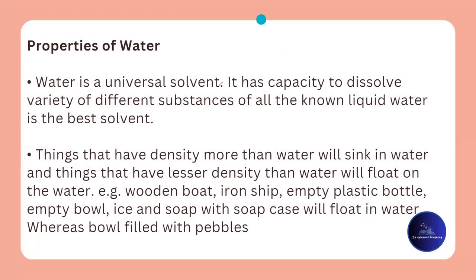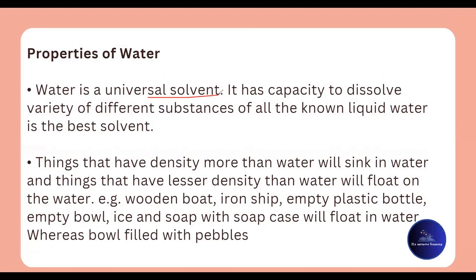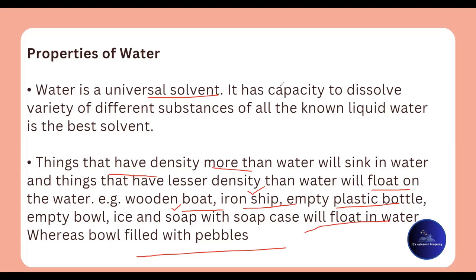Water is a universal solvent — you can dissolve many things in it, it has the property to dissolve. Things that have a density greater than water will sink, while things with lower density will float — like a wooden boat. An iron ship is heavy, but if the water it displaces weighs more than the ship, it floats. A bowl filled with pebbles will sink because the weight of the pebbles is too great.